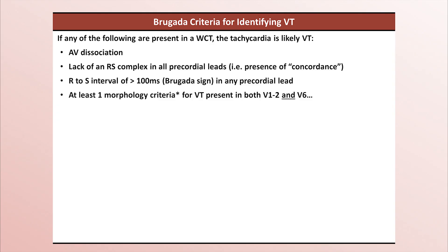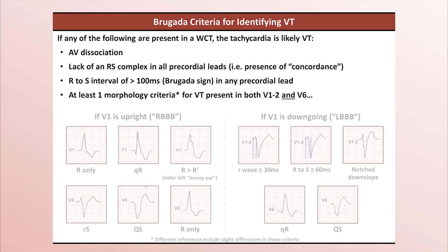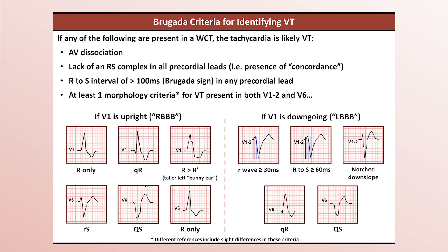The specific morphology criteria depends on whether the QRS complex in V1 is upright or down-going, often oversimplified as a right bundle branch block versus a left bundle branch block pattern. Perhaps if reading EKGs was the most common clinical task a person did in their profession, these morphology criteria would be internalized and become second nature. But I have yet to meet a practicing clinician, including cardiologists, who have memorized these — which is why, despite frequent mention in EKG learning resources, the Brugada criteria are not commonly used in practice.